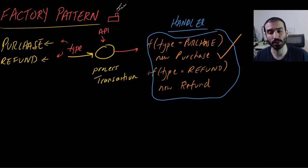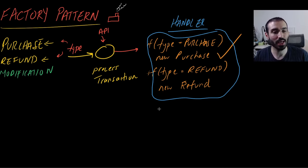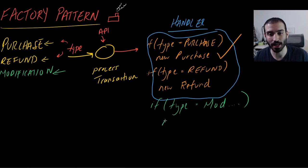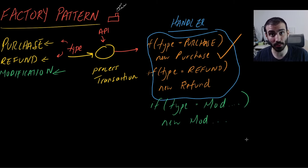Let's think about a hypothetical: say we introduce a new type — maybe it's like a modification. What do we need to do in the handler function to make it work? We just need to add another if statement: if type equals modification, return a new modification. But this approach violates an important design principle — the O in the SOLID principles. If you don't know those, check out my first design patterns video. This violates the open-close principle.